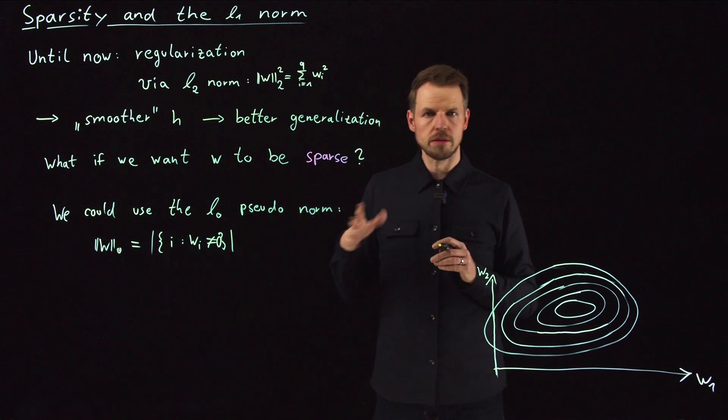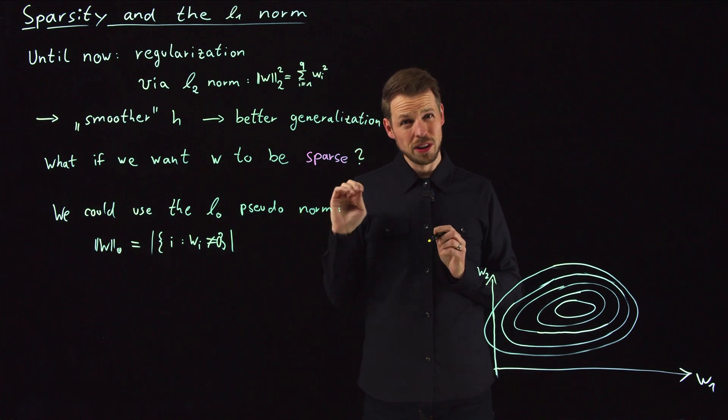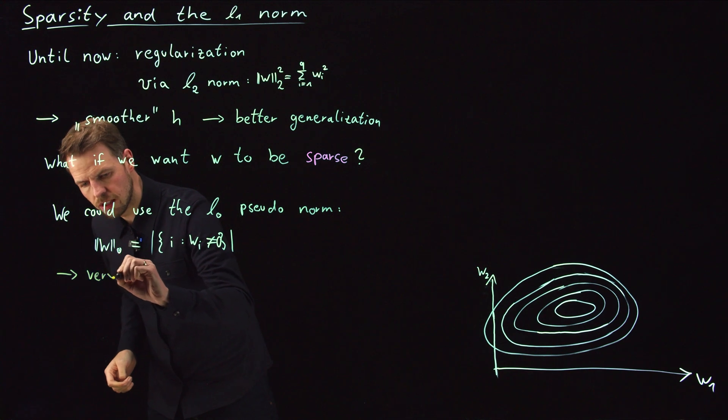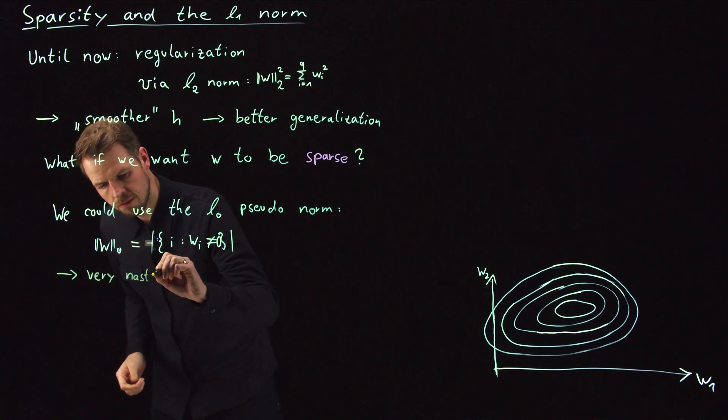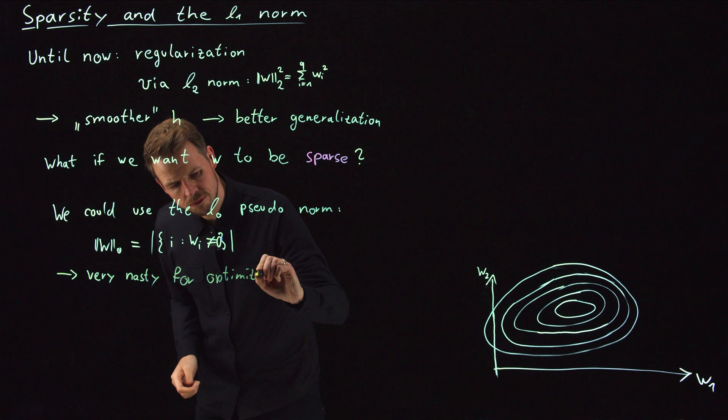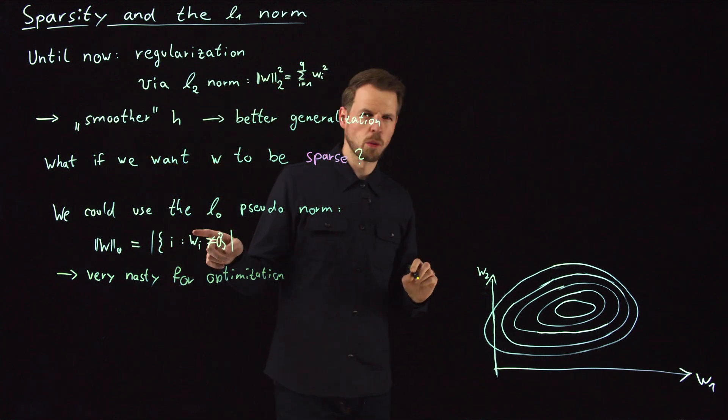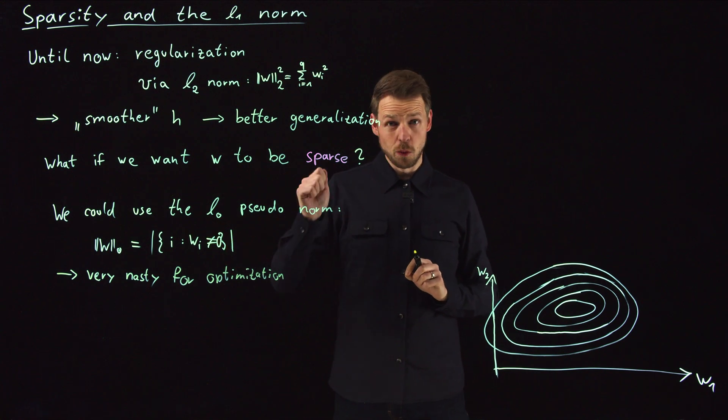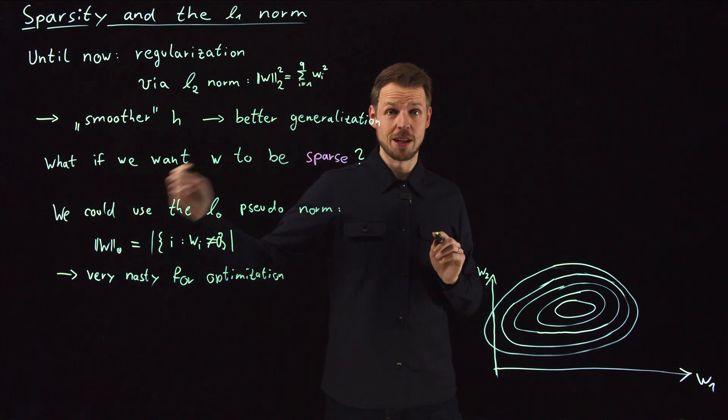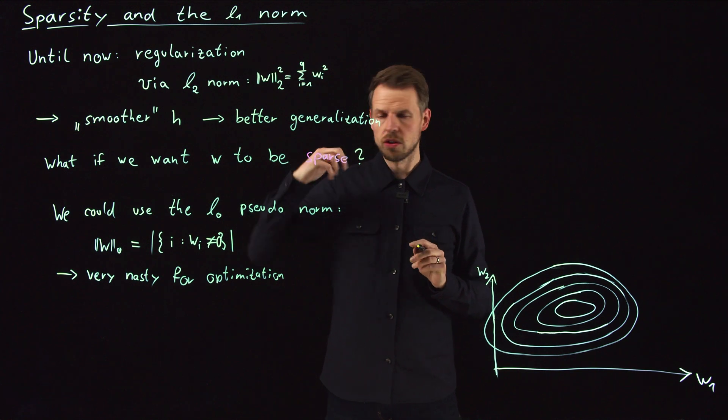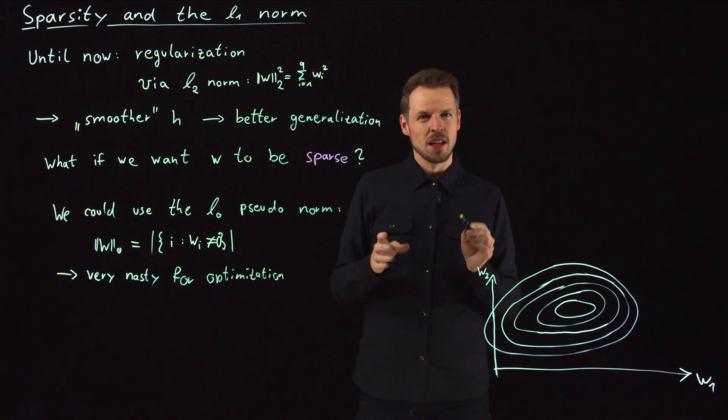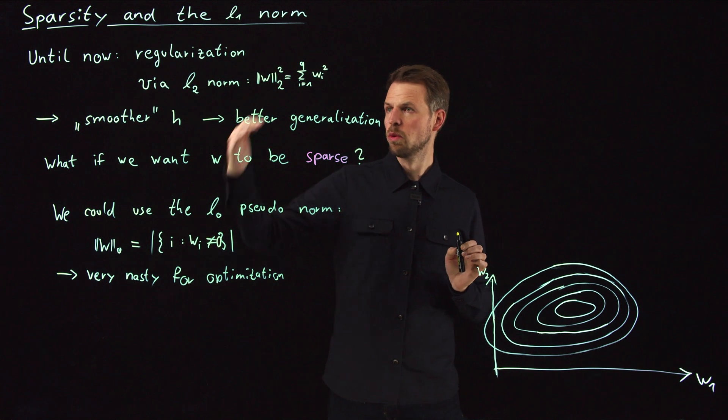But still, not everything is satisfied. And this also leads to a huge problem in terms of optimization. So this is very nasty for optimization, because you can basically do nothing about this. Let's assume your one weight was zero. And then you turn on one weight and set it to 10 to the minus 12, or some other very small number. Then the norm jumps by one. So it's not even continuous. And this makes it very, very nasty for optimization. And then you just end up with a combinatorial problem. So the question that we need to ask is, can we do something in between?